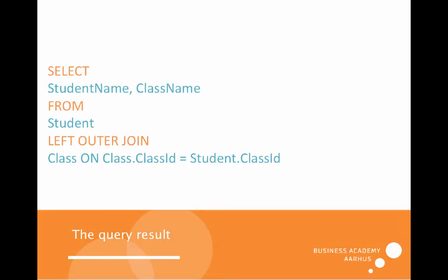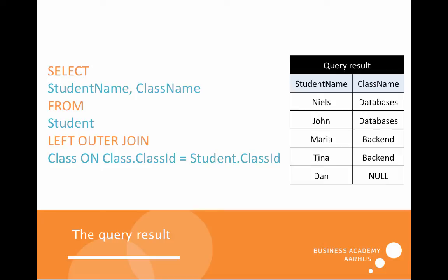The query looks like this. We have a SELECT — we select student name and class name from student. Then we make a join: we make the relation with a LEFT OUTER JOIN on class. That means we want to join class on student, so we use the primary key on class, class ID, and equal that to the class ID on the student.